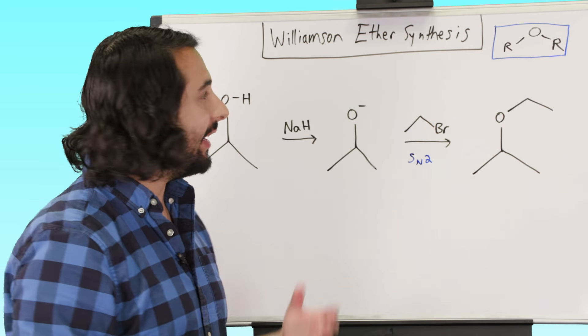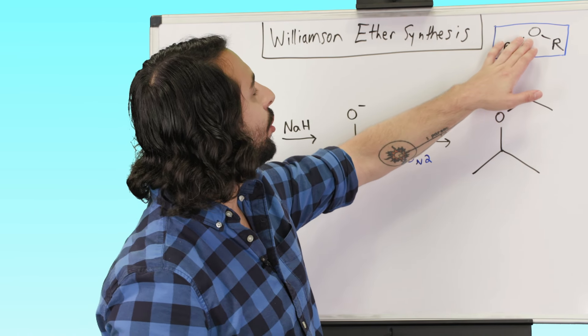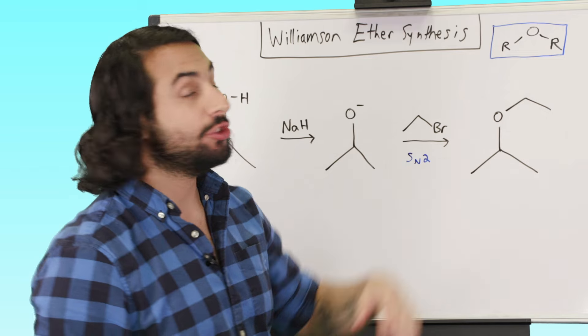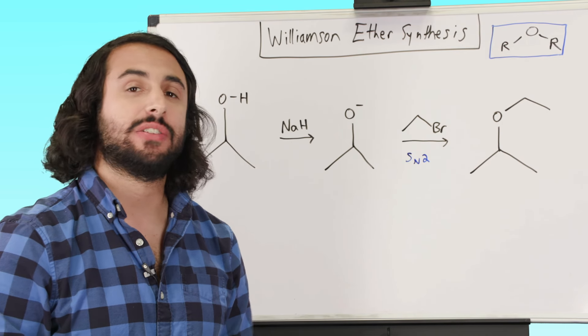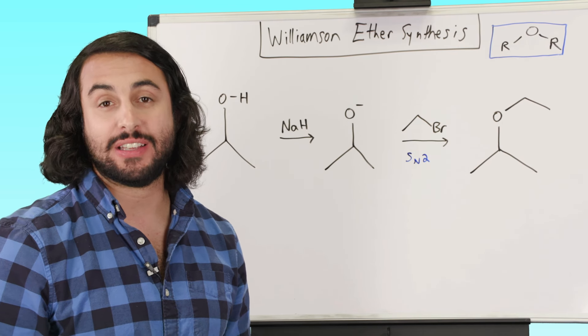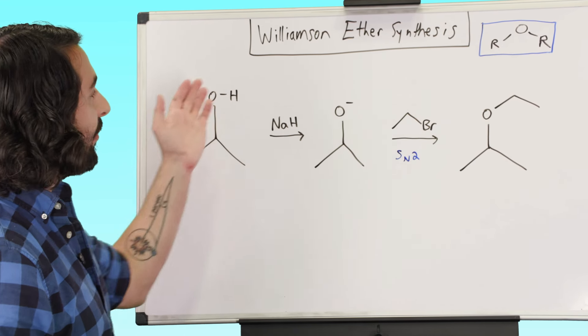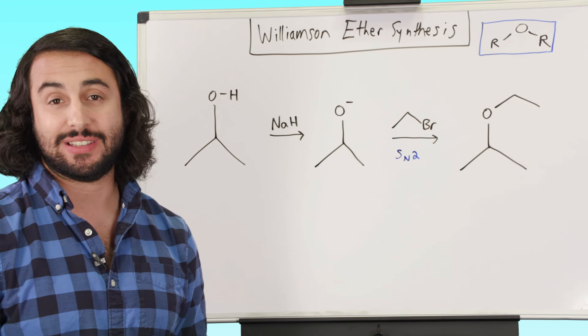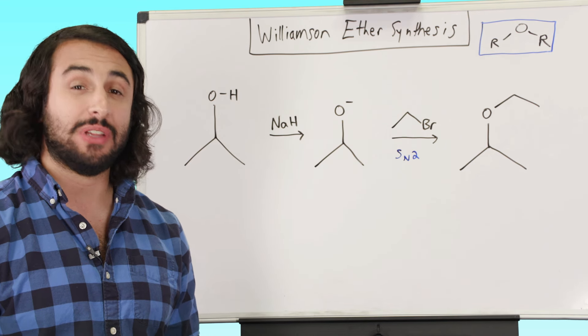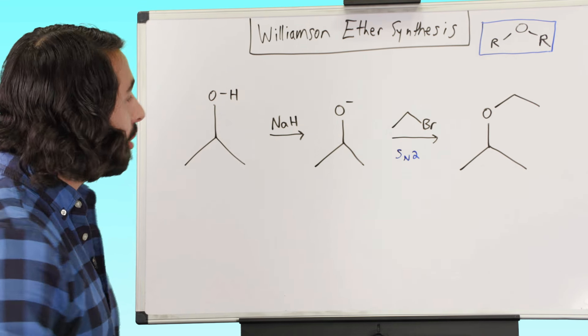So we know what an ether is. It's a functional group with an oxygen atom bound to two alkyl groups. And so now that we know what an ether is, we want to figure out some ways to synthesize ethers. And one way that's very common is the Williamson ether synthesis. And it's actually extremely straightforward mechanistically. There's not too much going on here.